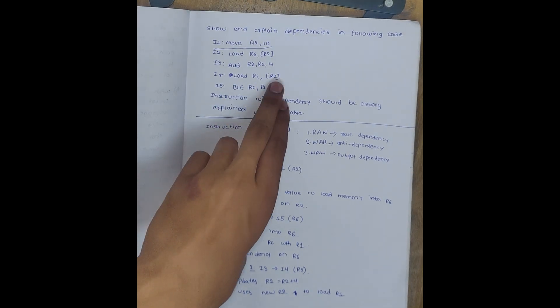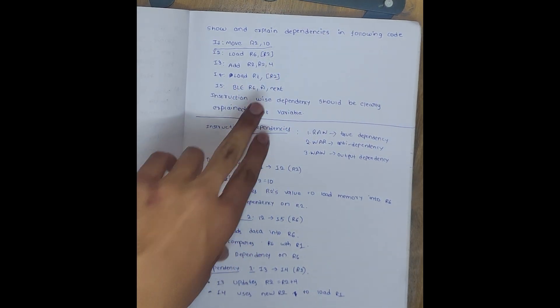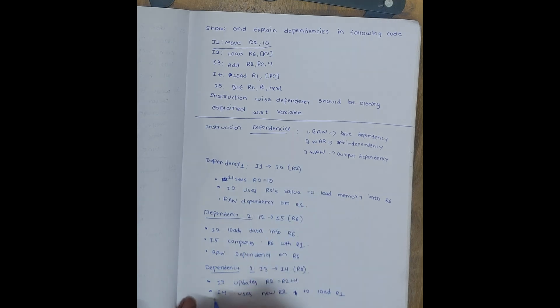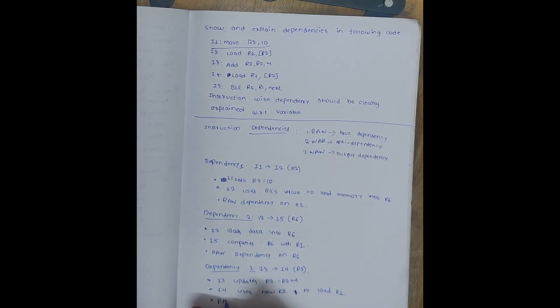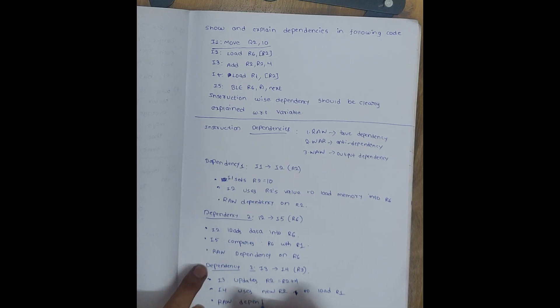I2 loads R2 and it is loading into R1. So similarly, same like this only. So we can say RAW dependency - dependency on R2. You think it will complete I3-I4, I1-I2, and I2-I5 - it is complete, you can think. But still there is one more dependency left - that is dependency 4.